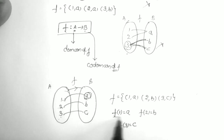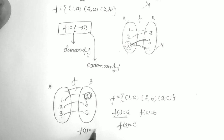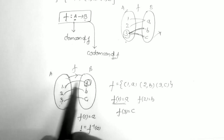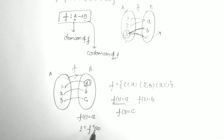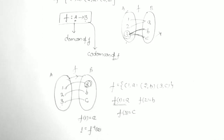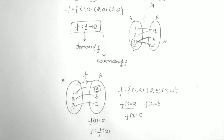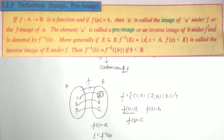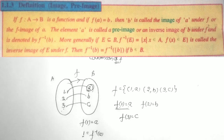The other notation: F(1) = a means a is the image of 1, and 1 is called the pre-image of a. If F: A→B is a function and F(a) = b, then b is called the image of a under F, and a is called the pre-image or inverse image of b under the function F. That is denoted by F⁻¹(b).